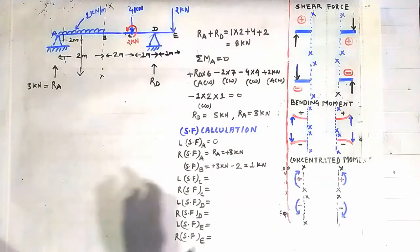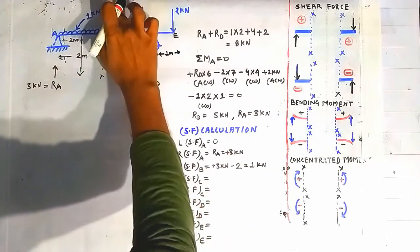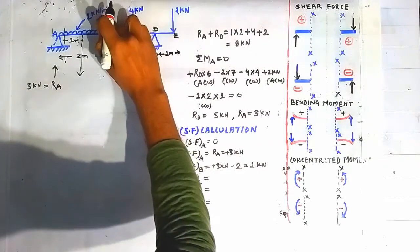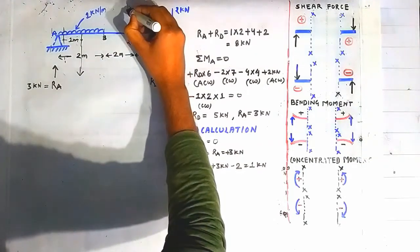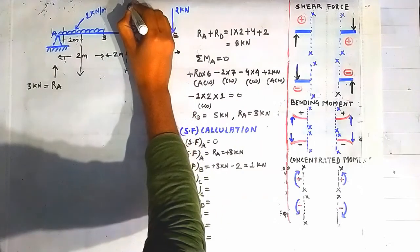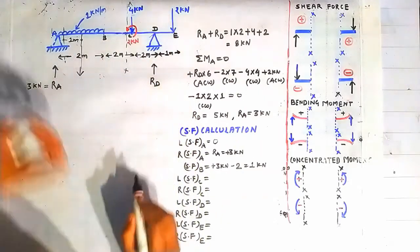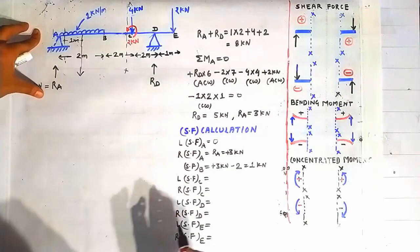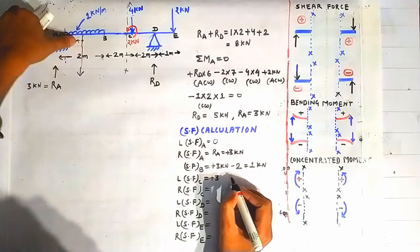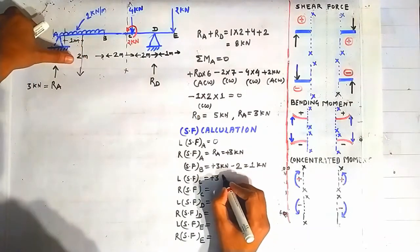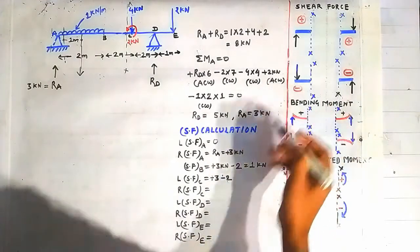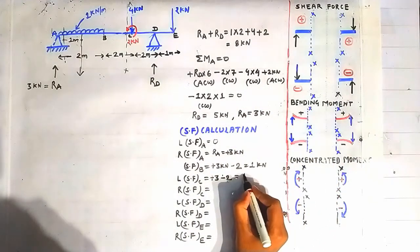For shear force on the left side of point C, we construct a section through the left side of point C. Looking on the left side: RA contributes +3 kN and the UDL contributes a negative 1 × 2 = 2 kN. The shear force on the left side of point C is again 1 kN.